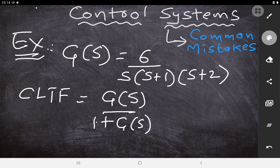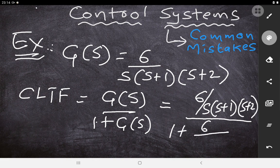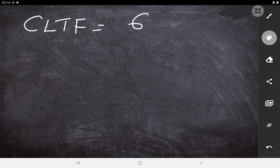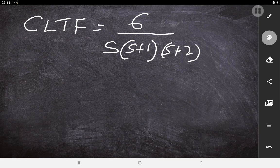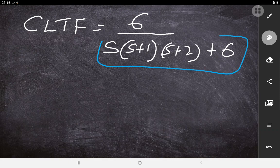Substituting, we get: 6 / [s(s+1)(s+2)] divided by 1 + 6 / [s(s+1)(s+2)]. After solving, you get the closed loop transfer function as 6 / [s(s+1)(s+2) + 6]. This denominator is what we call the characteristic equation.